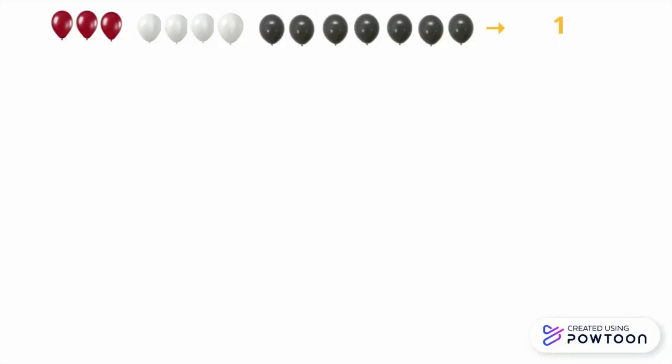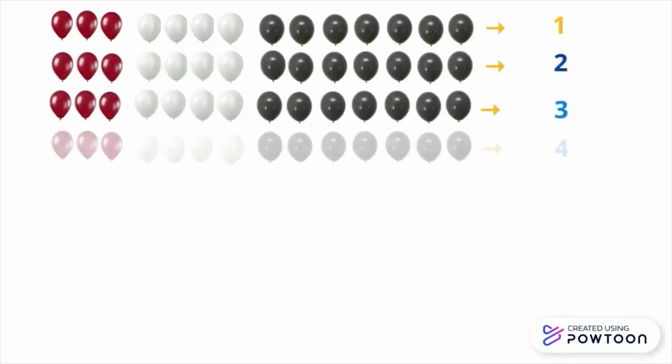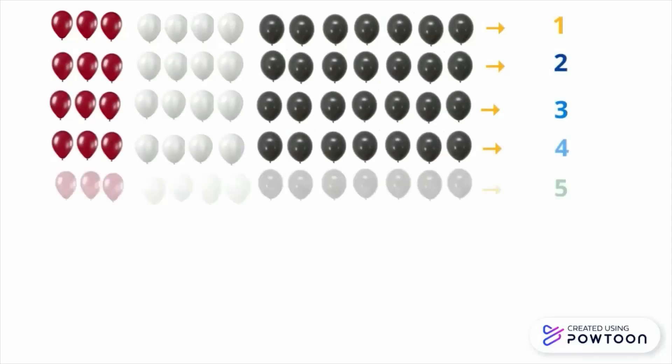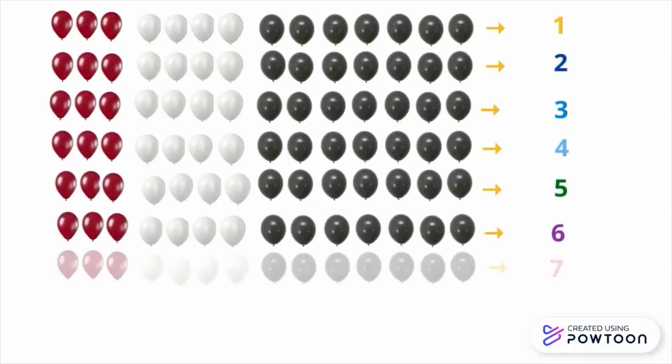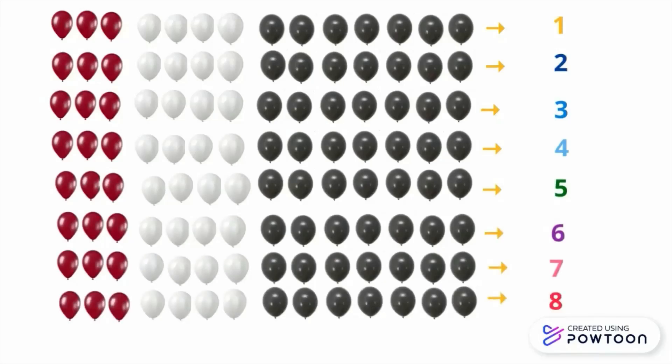Let us figure that out. In each arrangement, there are 3 maroon, 4 white, and 7 dark gray balloons. This is set 1, set 2, 3, 4, 5, 6, 7, and 8. There you go.